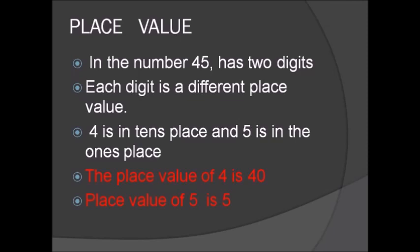Place value. In the number forty-five has two digits. Each digit is a different place value. Four is in tens place and five is in the ones place.